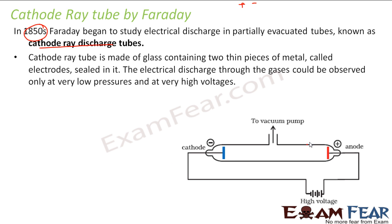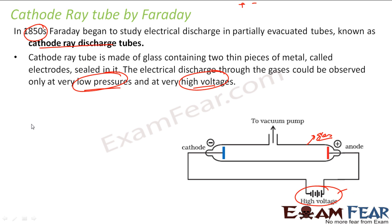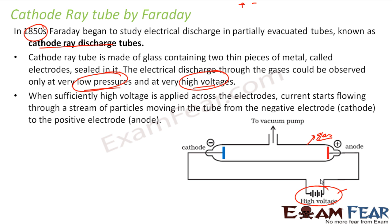This is actually made of glass, and there are two metal electrodes sealed inside it. The electrical discharge of the gas can be observed only at low pressure and high voltage. So they pump out everything and apply very high voltage — that's why it's called a cathode ray tube, where you have low pressure and high voltage.